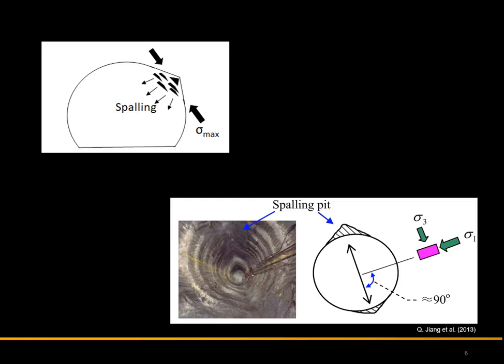Martin and Christensen note that when the tangential stresses on the boundary of an excavation reach and exceed the crack initiation, the potential for spalling exists. Spalling will result in two diametrically opposite V-notch shapes being developed, with the notch tips pointing in the direction of the minimum principal stress.